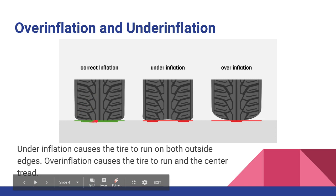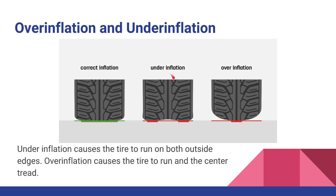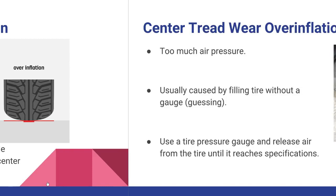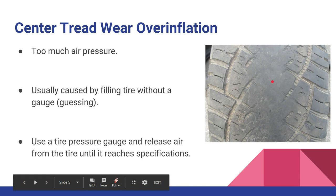Correctly inflated tires have a full contact pattern across the tread from one side to the other. When we under-inflate, the tire sags down on the outsides, causing wear on those outside edges — both sides of the tire will wear. If you over-inflate, too much pressure bulges the tire out in the center, causing center tire wear. This is a good example of a tire run with too much air pressure — you can see the center tread is almost gone.